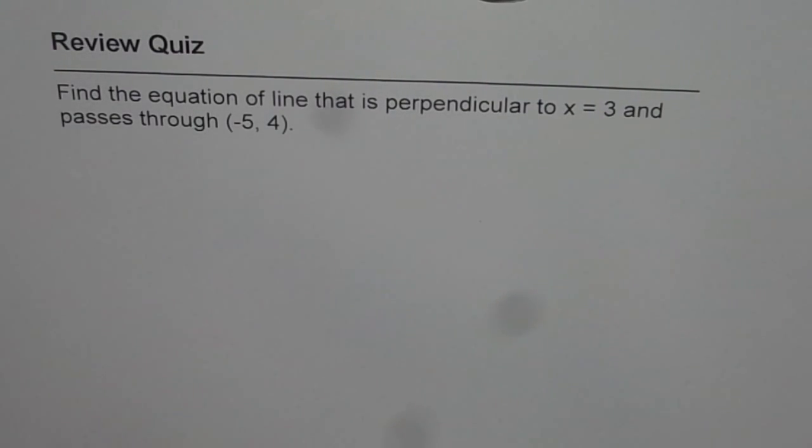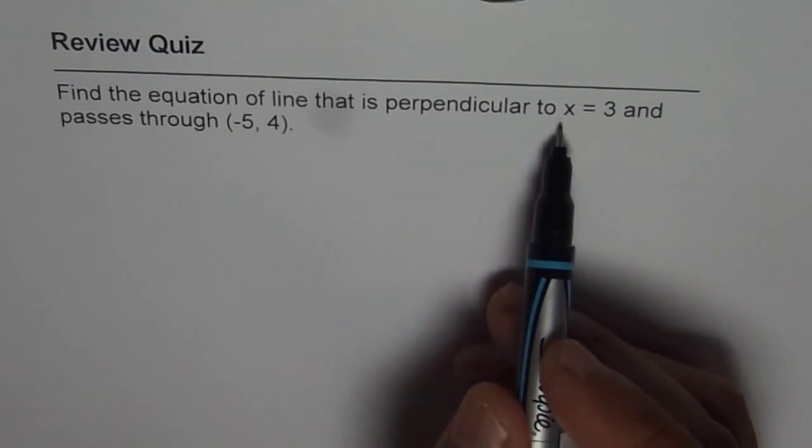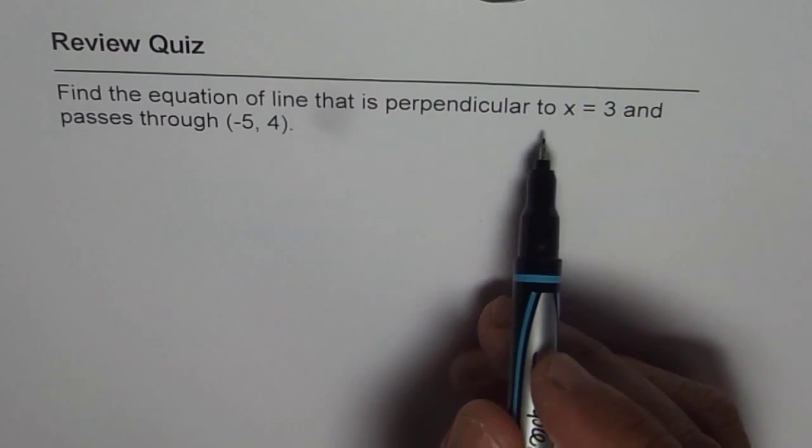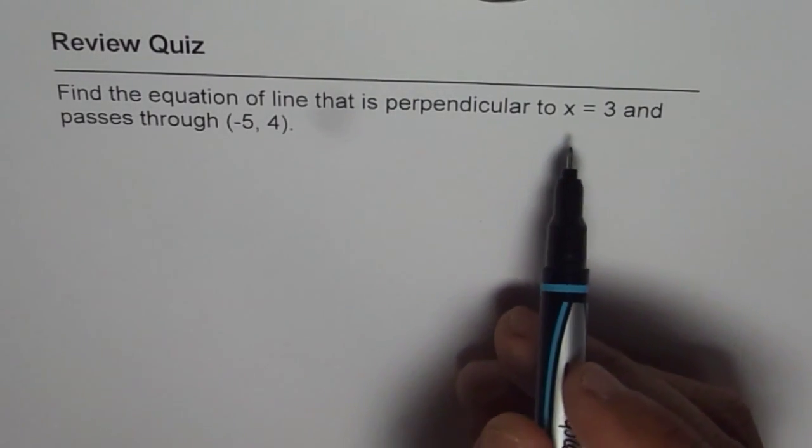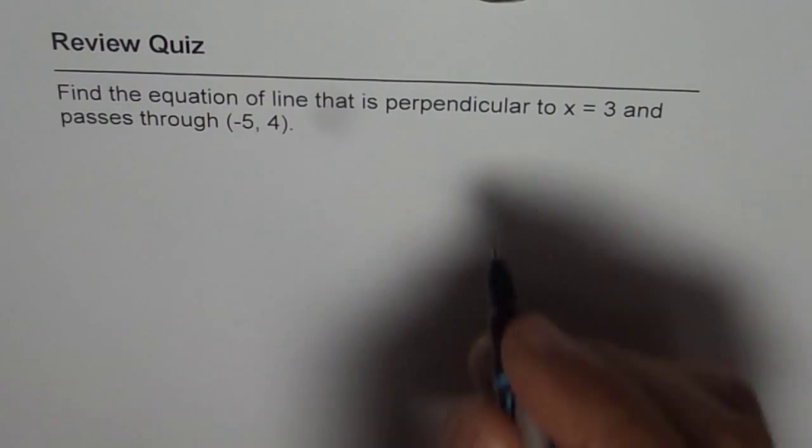x equals 3 is actually a vertical line and slope is undefined. So, the negative reciprocal will be slope of 0, a horizontal line. That is how you have to see it.